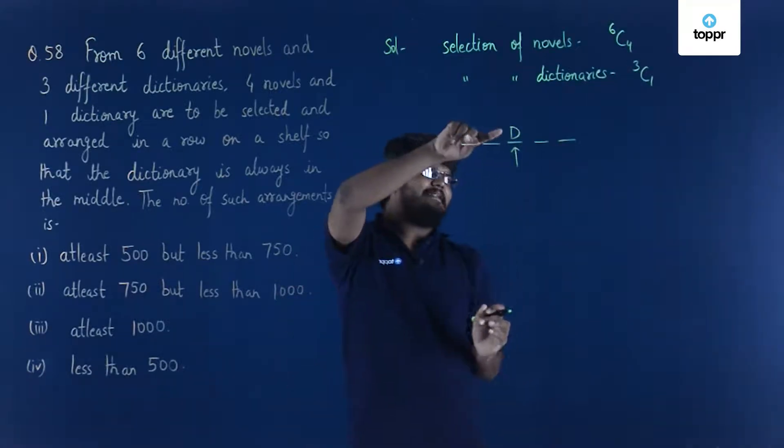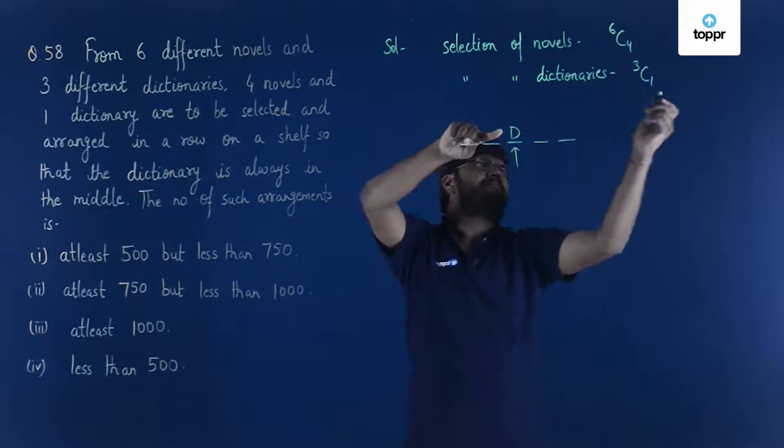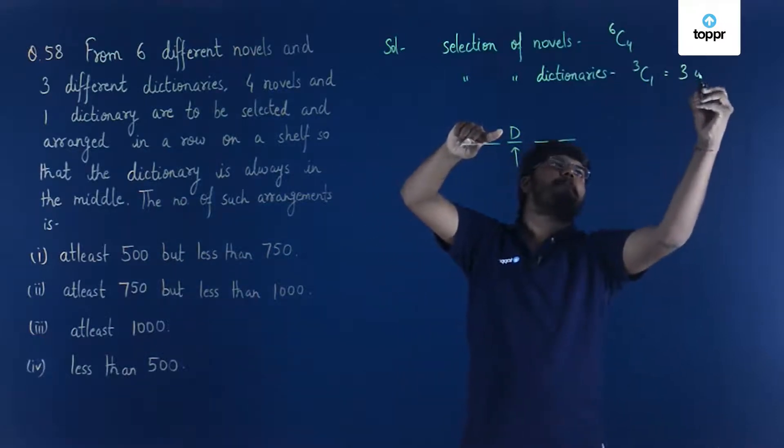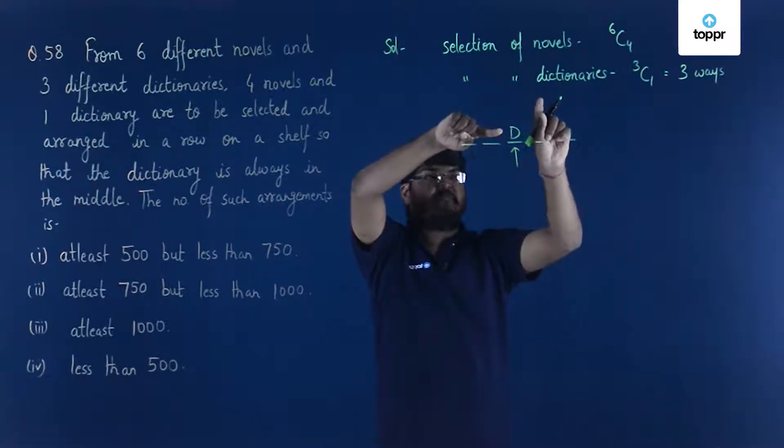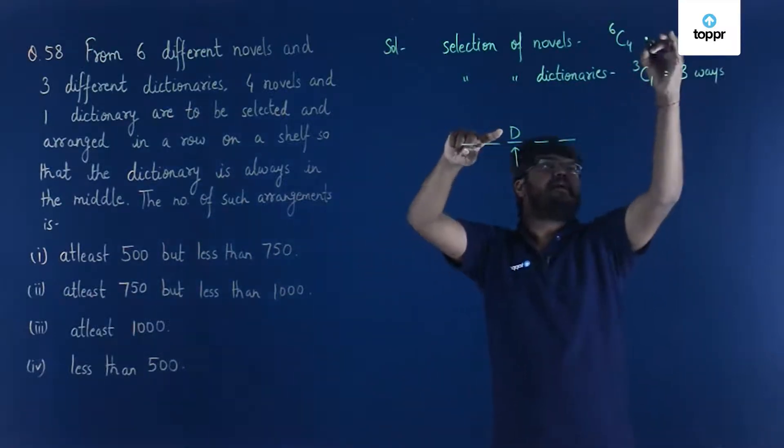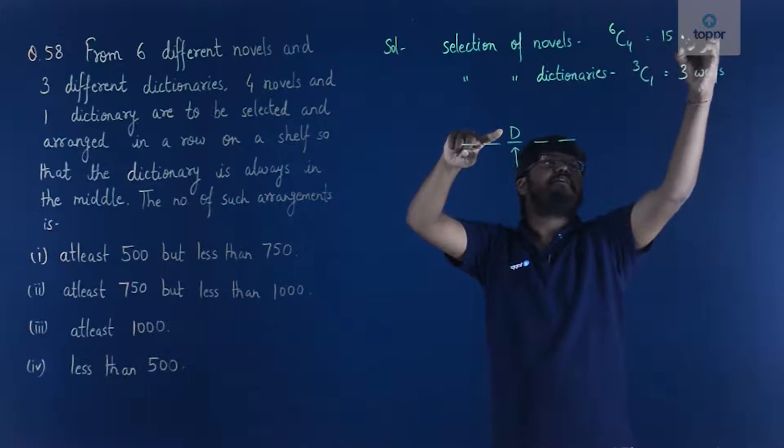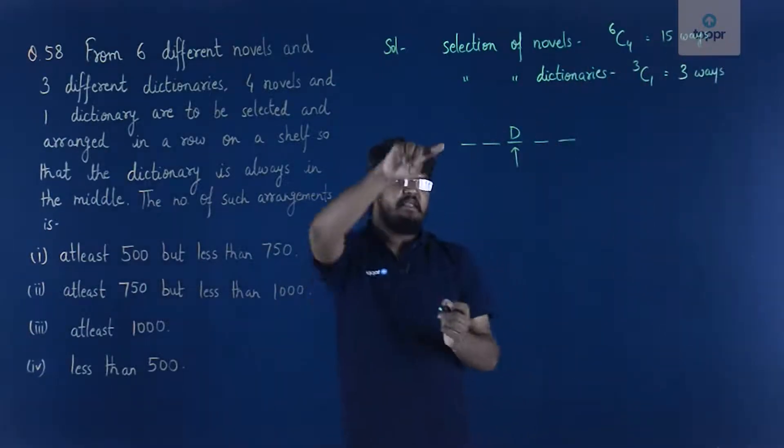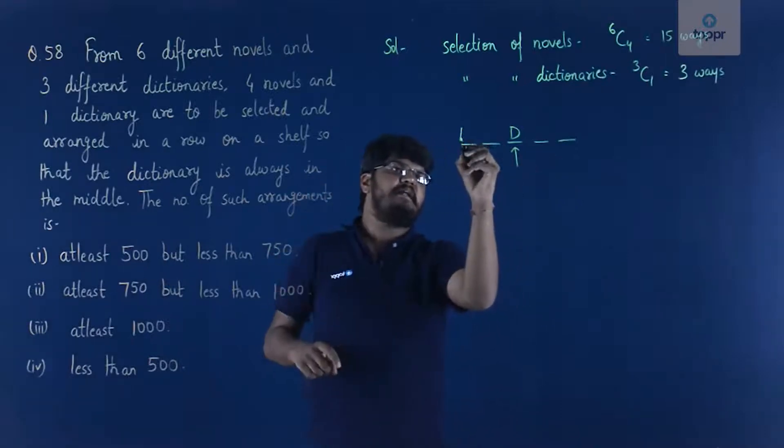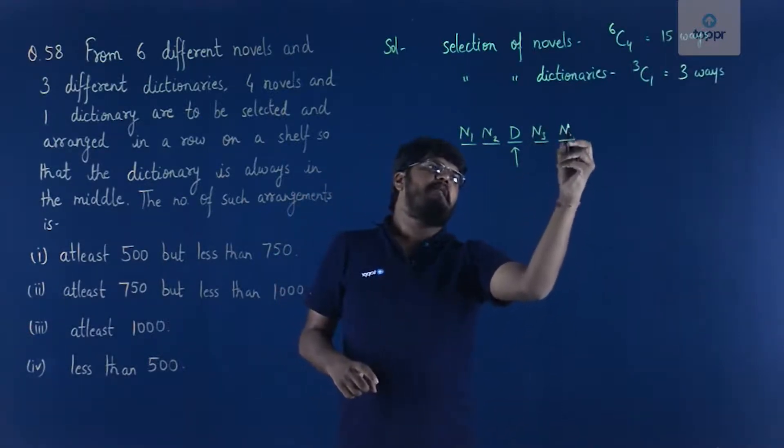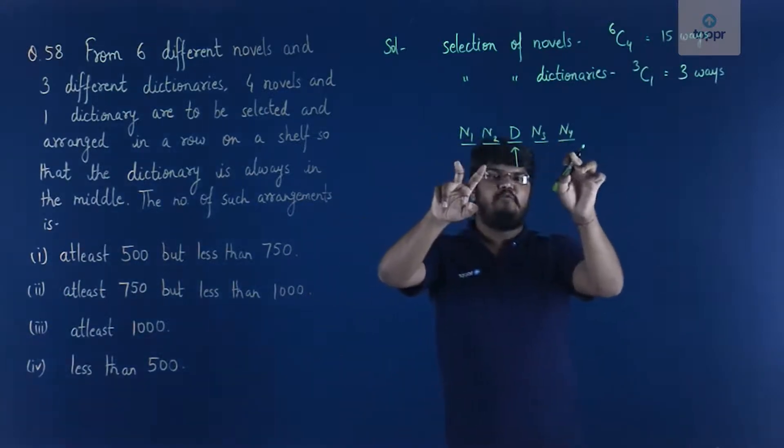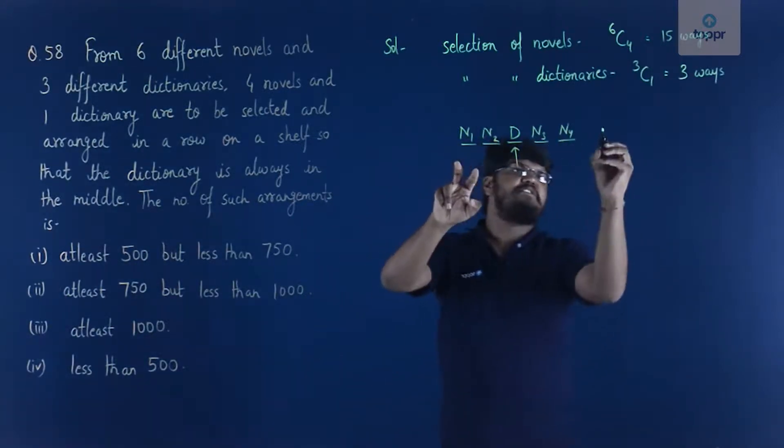Now, this means that whatever this dictionary is out of these 3C1 which is well three ways, it will occupy this place whether it be D1 that is dictionary 1, dictionary 2 or dictionary 3, and 6C4 will basically be 15 ways. It would be any four of the novels and then the remaining novels can be arranged like N1, N2, N3, N4 and at the same time it could be N1, N3, N2, N4 or any other possible combination.